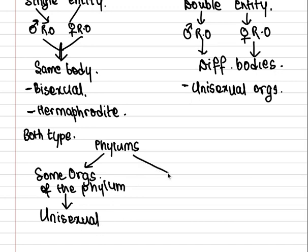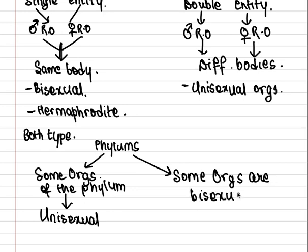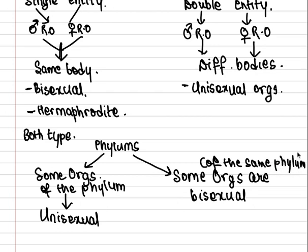Some organisms are bisexual, of the same phylum. Unisexual organisms are also called dioecious, and bisexual organisms are also called monoecious, as we have studied above. These are both type of classification.